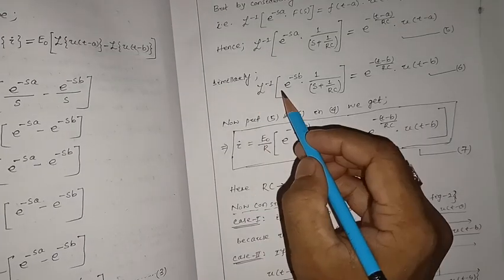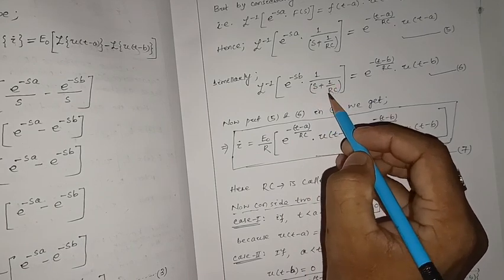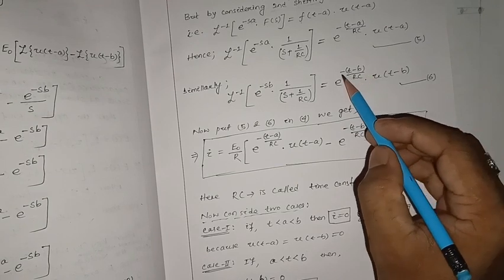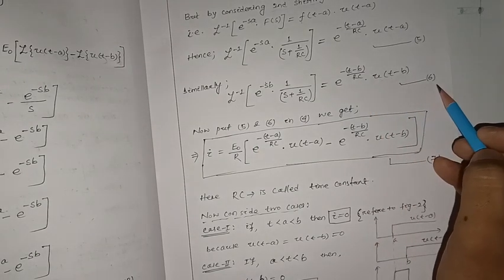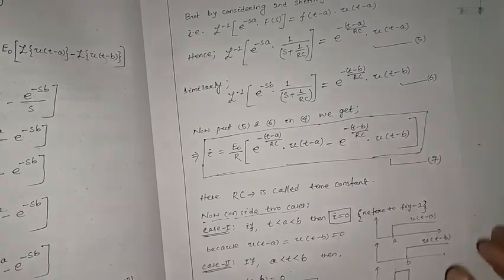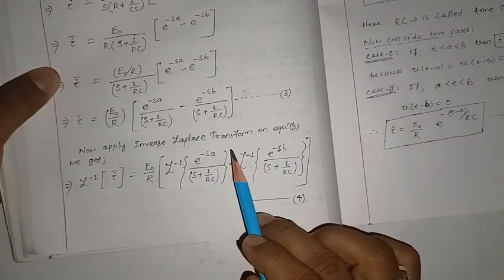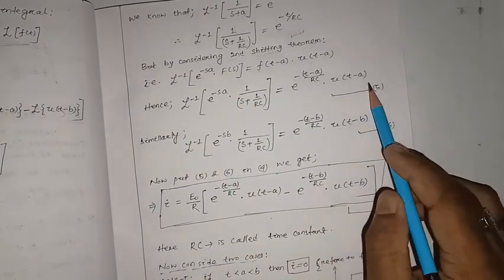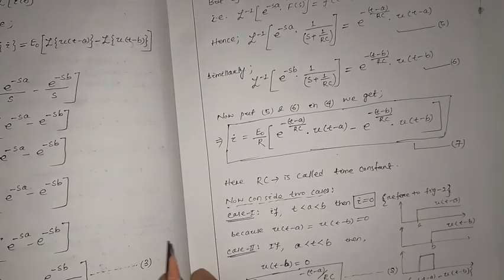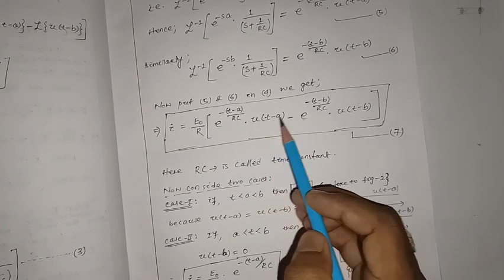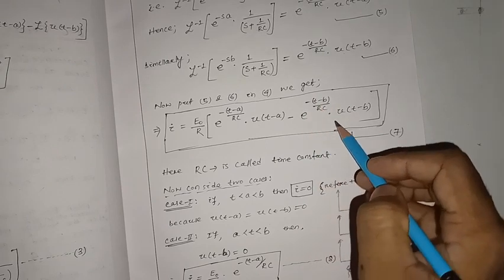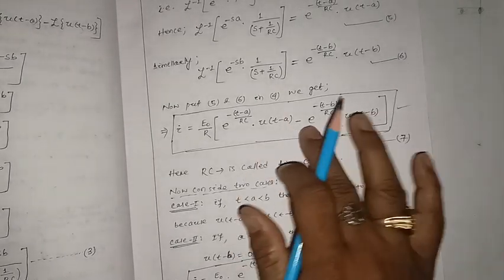Substituting equations five and six into equation number four, we get the general solution: i = (E₀/R) · [e^(−(t−a)/RC)·u(t−a) − e^(−(t−b)/RC)·u(t−b)]. Here RC is the time constant of the circuit.